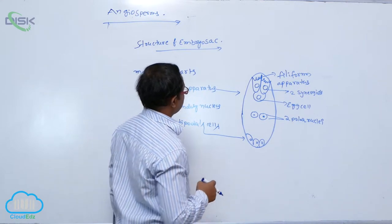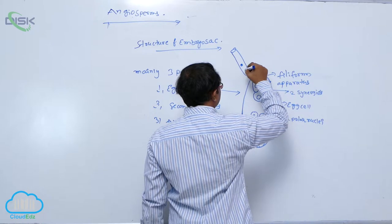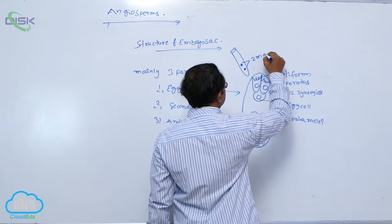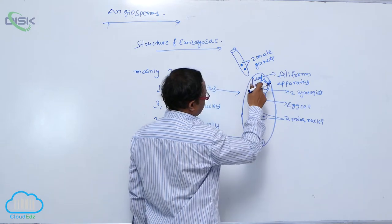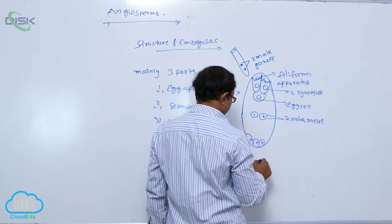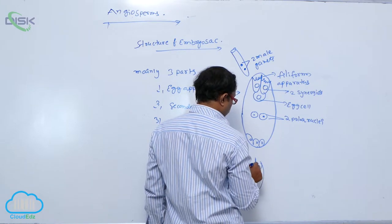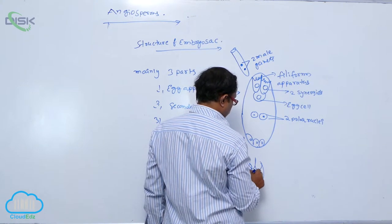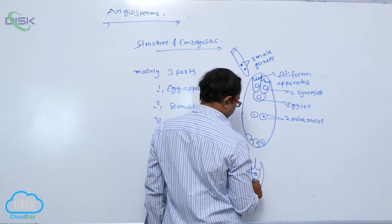At the time of fertilization, it is a pollen tube. The pollen tube moves towards the embryo sac. When it enters into the embryo sac, it carries two male gametes. It is the bursting of one synergid cell, entering into the embryo sac, and releasing the two male gametes. One male gamete is fused with the egg cell. Another male gamete is fused with the polar nuclei.